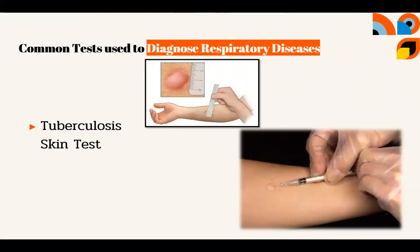Tuberculosis skin test. This test checks for the presence of TB bacteria in the body. A small amount of a substance called tuberculin is injected into the skin of the arm. After 48 to 72 hours, swelling in the area will positively confirm the presence of TB bacteria in the body.